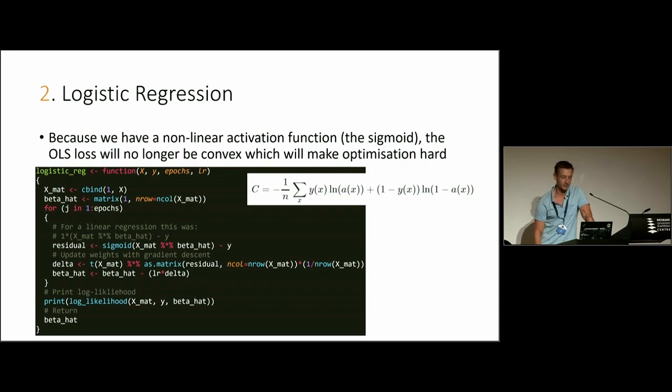Now we have a nonlinear activation function. The mean squared error loss will no longer be convex, which will make optimization hard. We have this different loss function. I called it the negative log likelihood, which is maybe what you're more familiar with. With neural networks, you would normally call this the cross entropy loss. You can see this is a more specific case of a general cross entropy loss that you get for neural networks and usually for a softmax multinomial logistic regression. The code for me to implement logistic regression was pretty much the same as the linear one, except instead of multiplying it implicitly by one, I have my sigmoid function. And the gradient descent is just like it was before.